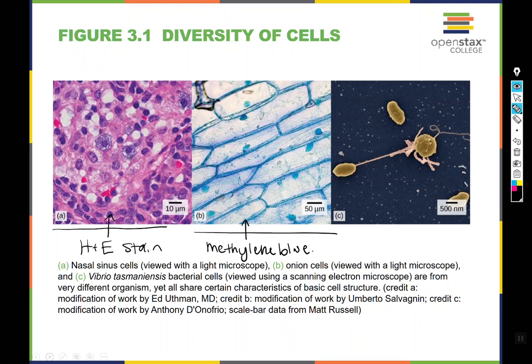Not all stains are created equal, and some of them result in different colors than others. Over here at C, we have different cells interacting with each other. In this particular case, we've got Vibrio tasmaniensis bacterial cells. Vibrio is an illness you can contract from eating undercooked or poorly prepared seafood, specifically shellfish like oysters. The H&E and methylene blue images are both light micrographs, while this one is scanning electron microscopy, which is a different way to get images and can resolve much smaller structures.